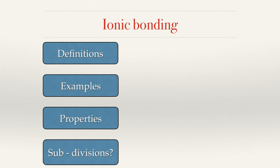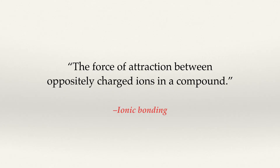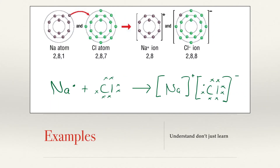For both ionic and covalent bonding, there are several headings you need to be able to discuss: definitions, examples, their properties, and possible subdivisions. An ionic bond is defined as the force of attraction between oppositely charged ions in a compound. As ionic bonding only deals with the outermost orbit, chemists represent ionic bonding using dot and cross diagrams, which is easier than drawing the full Bohr diagram.